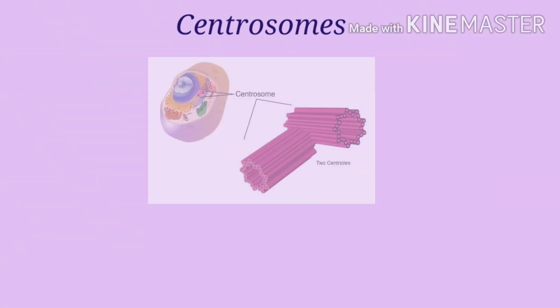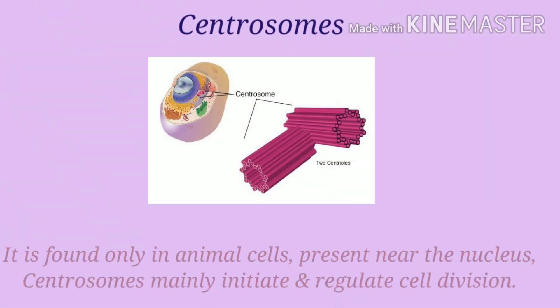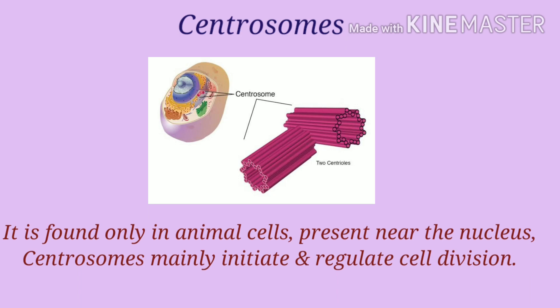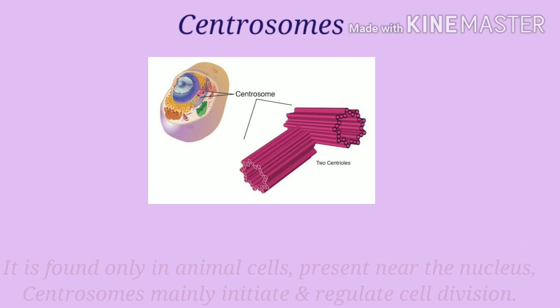Next one is centrosomes. It is found only in animal cells. It is present near the nucleus. Centrosomes mainly initiate and regulate cell division.